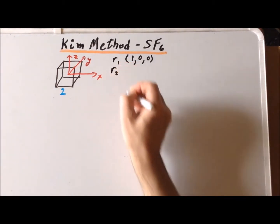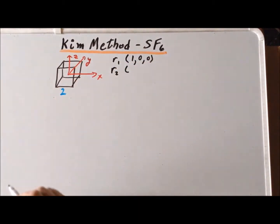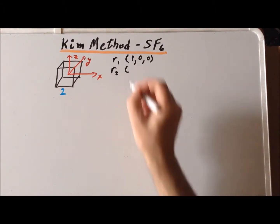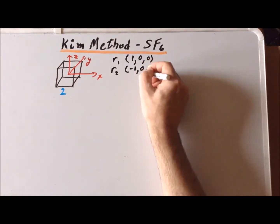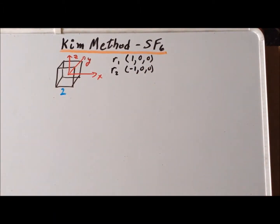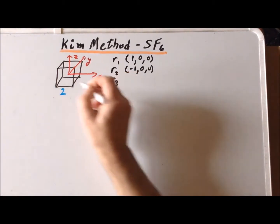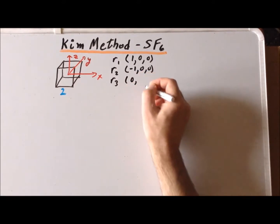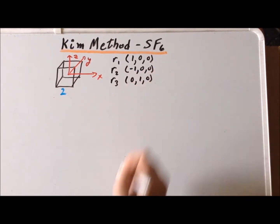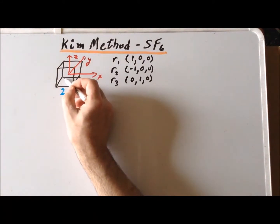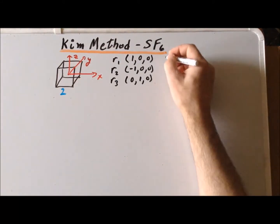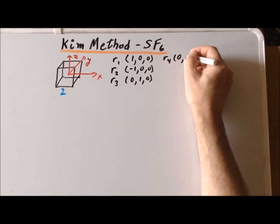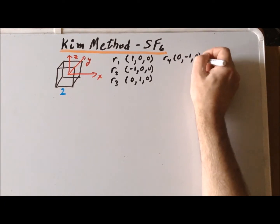The second fluorine atom, R2, we'll put at the left end of the x-axis. Since it's at the leftmost face of the cube, its coordinates are (-1, 0, 0). For a fluorine atom at the center of the back face, that gives it an x-coordinate of 0 and a y-coordinate of 1. For a fluorine atom at the center of the front face, R4, it's going to have an x-coordinate of 0, a y-coordinate of -1, and a z-coordinate of 0.